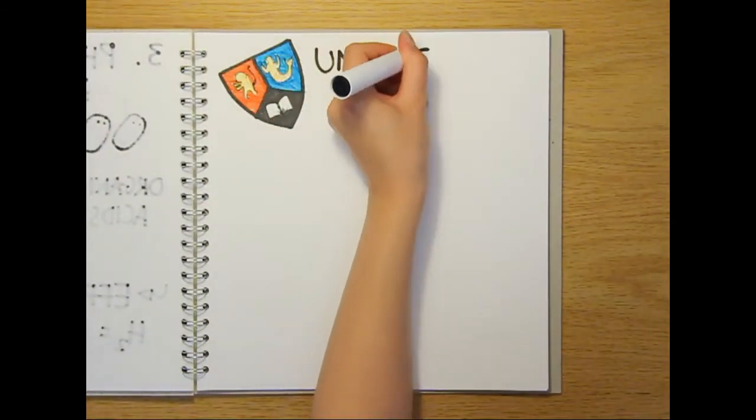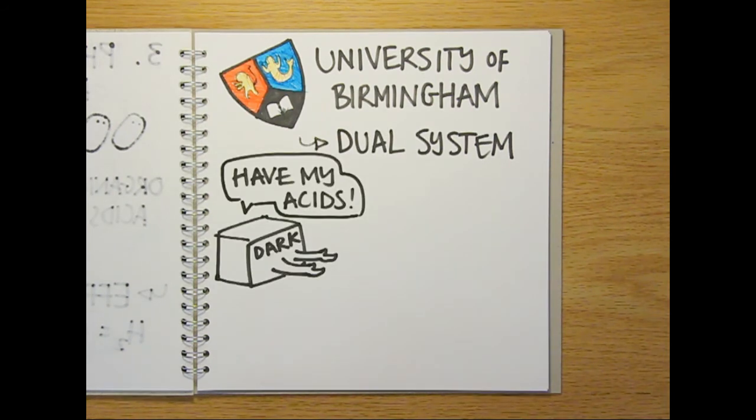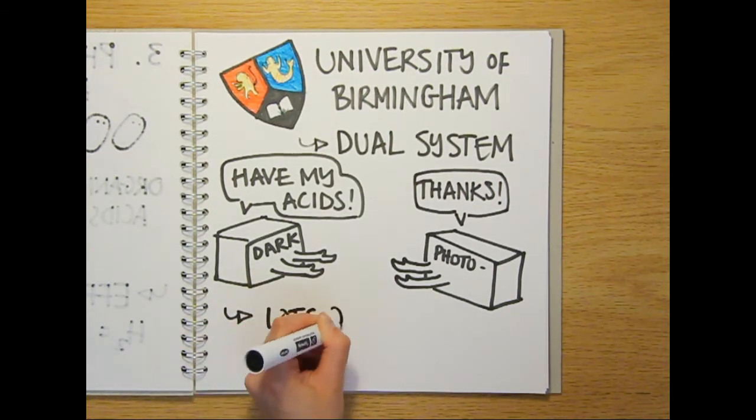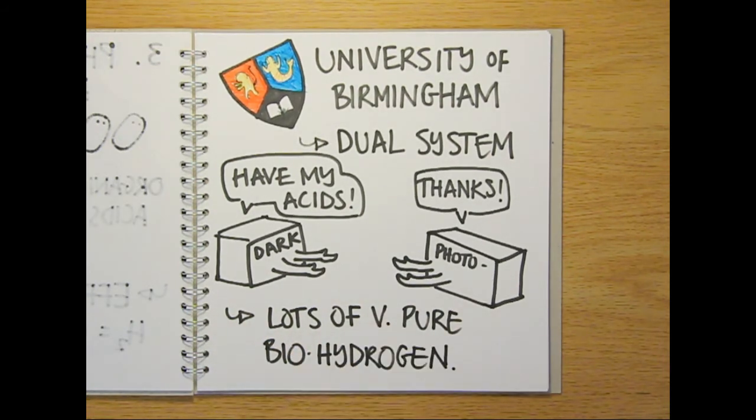Researchers at the University of Birmingham are working on a dual system that uses dark fermentation and photo fermentation, feeding the organic acids from the first process directly into the reactors for the second. This allows a large amount of very pure biohydrogen to be produced alongside a whole range of useful byproducts.